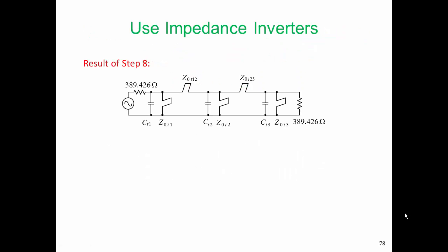The result of the previous step is that we scaled the characteristic impedance of the shunt stubs to make sure that they were between 30 and 80 ohms. In particular, Z02 was scaled to 80 ohms.